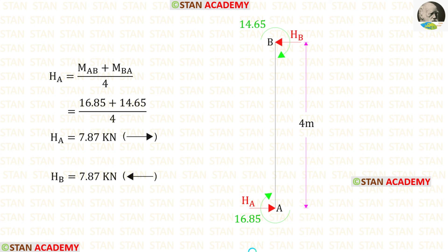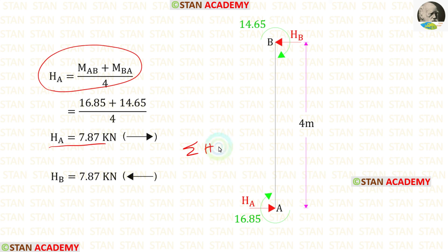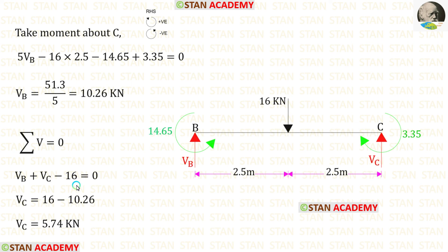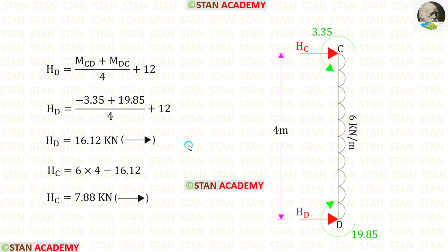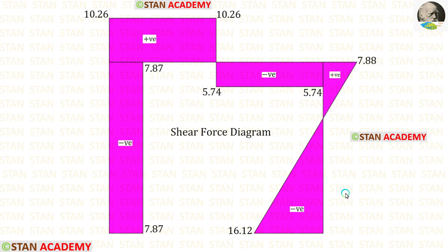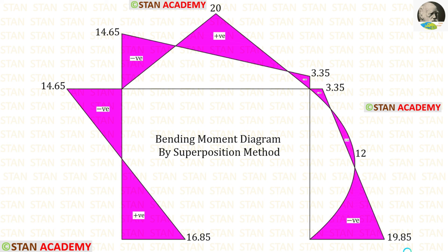Now let us find the horizontal reactions in column AB. Using the previously made expression we can find HA, and using sigma H = 0 we can find HB. Then let us find the vertical reactions in beam BC: taking moments about C we can find VB, and by applying the equilibrium rule we can find VC. Now let us find the horizontal reactions in column CD. Using the previously made expression we can find HD, and then applying sigma H = 0 we can find HC. Here you can see the shear force diagram, and we can draw the bending moment diagram by the superposition method. Now we are going to end this session. Thank you for watching this video.